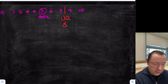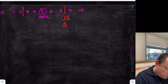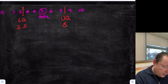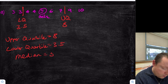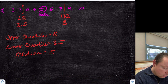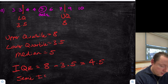The middle of 7 and 9 is 8, so the upper quartile is 8. The lower quartile is the middle of 3 and 4, which is 3.5. So upper quartile equals 8, lower quartile equals 3.5, median equals 5. The interquartile range is 8 take away 3.5 equals 4.5. The semi-interquartile range is half of that: 4.5 divided by 2 equals 2.25.